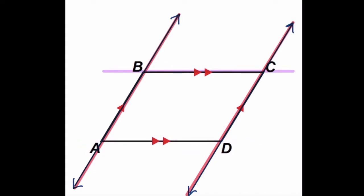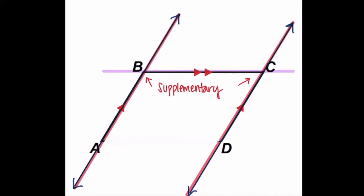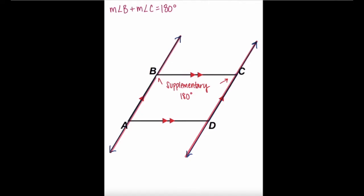Let's just focus on side BC, so let's get rid of side AD for a moment. When looking at two parallel lines cut by a transversal, we know that alternate interior angles are congruent and alternate exterior angles are congruent. But what do we know about the consecutive interior angles? If you recall from our previous lesson, the consecutive interior angles are supplementary, meaning their measures add up to 180 degrees. So we know the measure of angle B plus the measure of angle C equals 180.